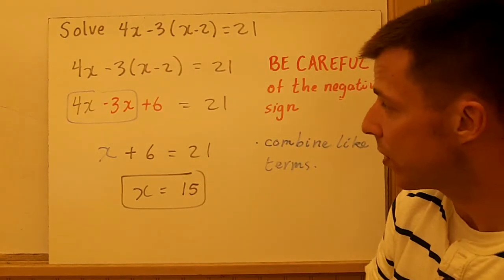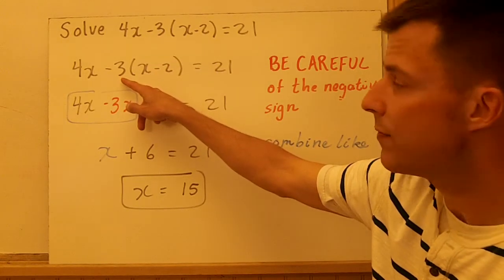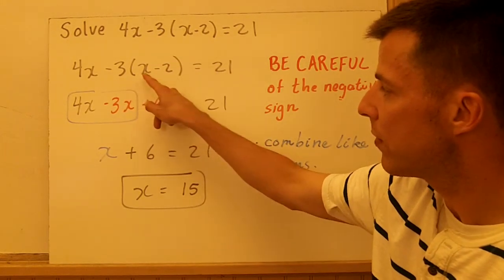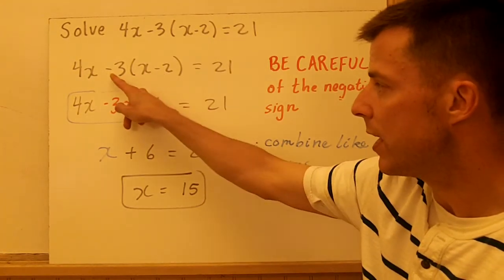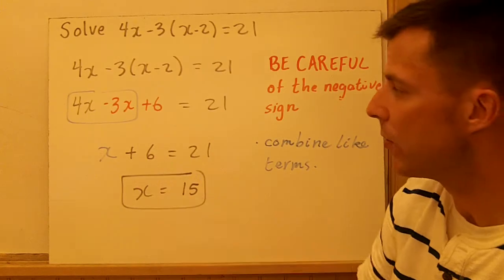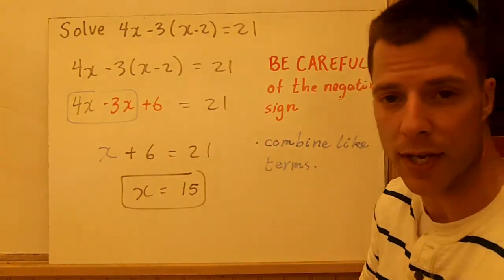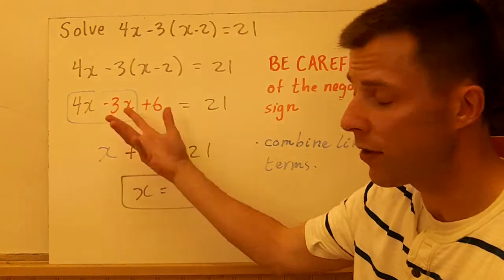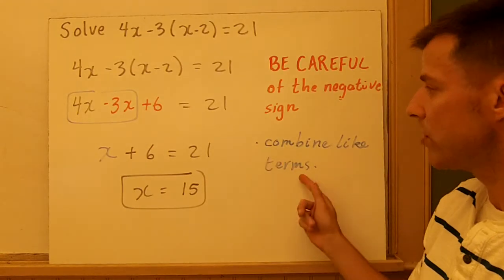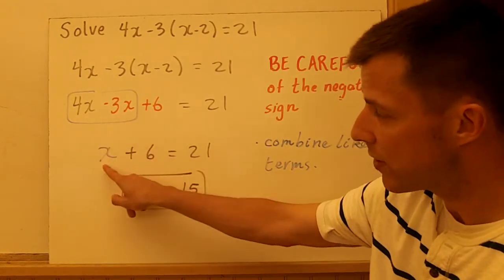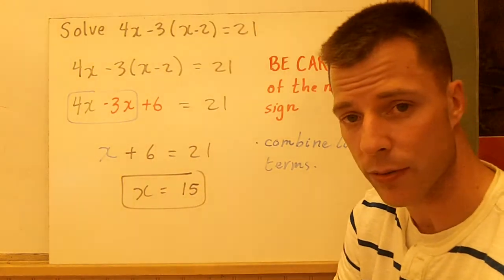We're going to distribute again first. Subtracting 3, pretending this is a negative number, we distribute negative 3 to both terms and you get minus 3x, and a negative and a negative make positive 6. Every other term comes along for the ride, the 4x comes down, the 21 comes down. Now you have like terms, 4x minus 3x. We combine those like terms and it gives us x. The 6 comes down, the 21 comes down.